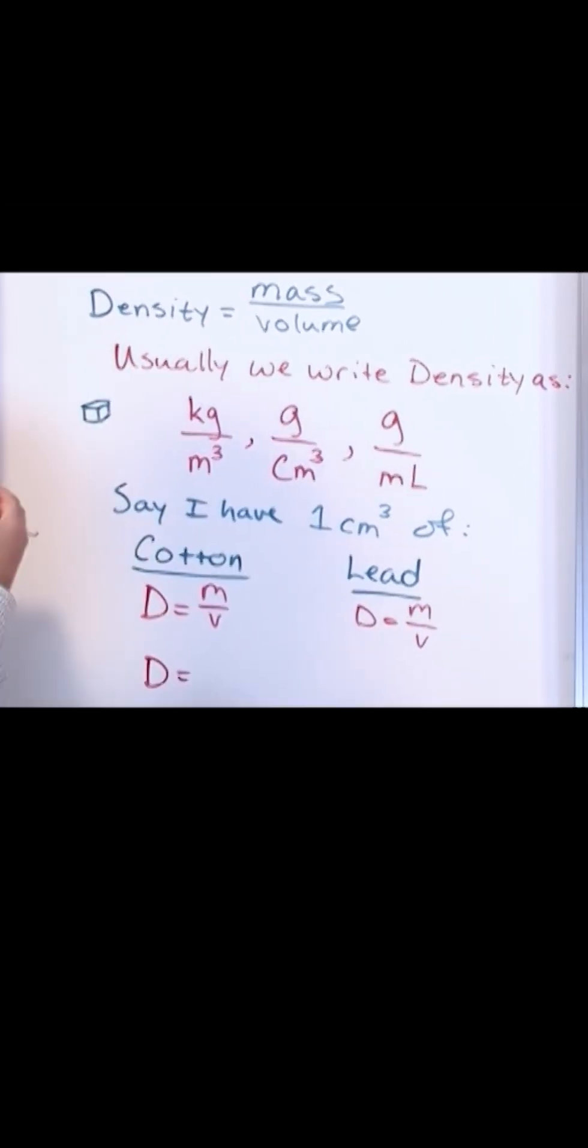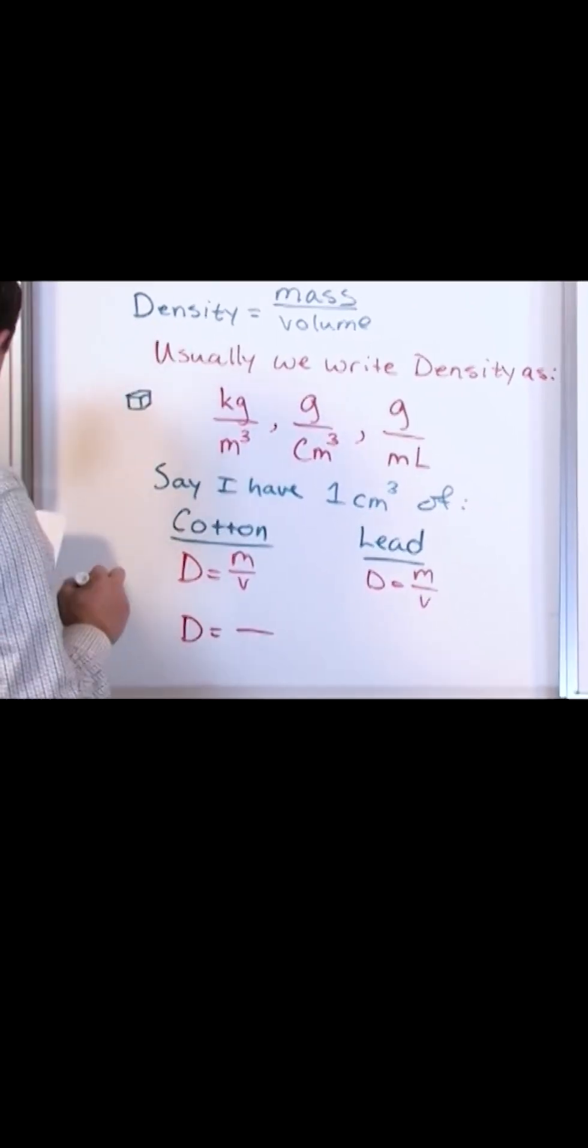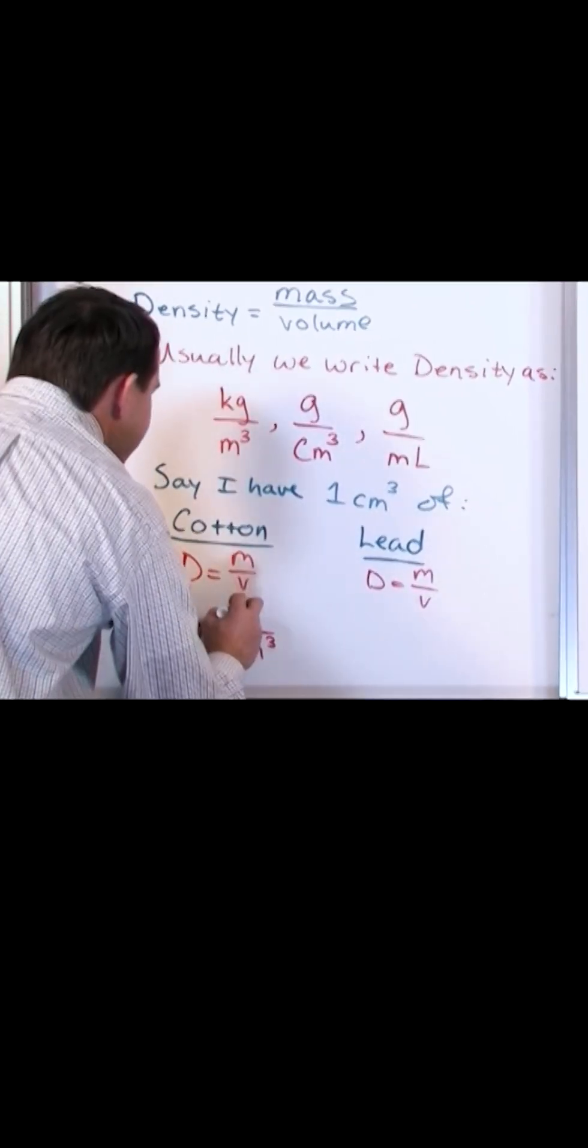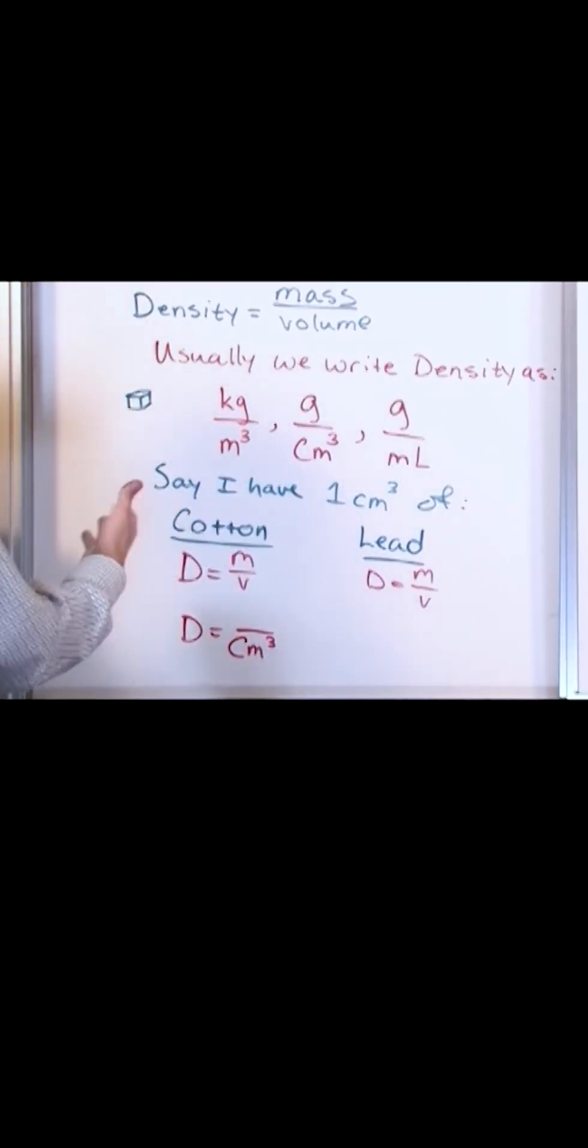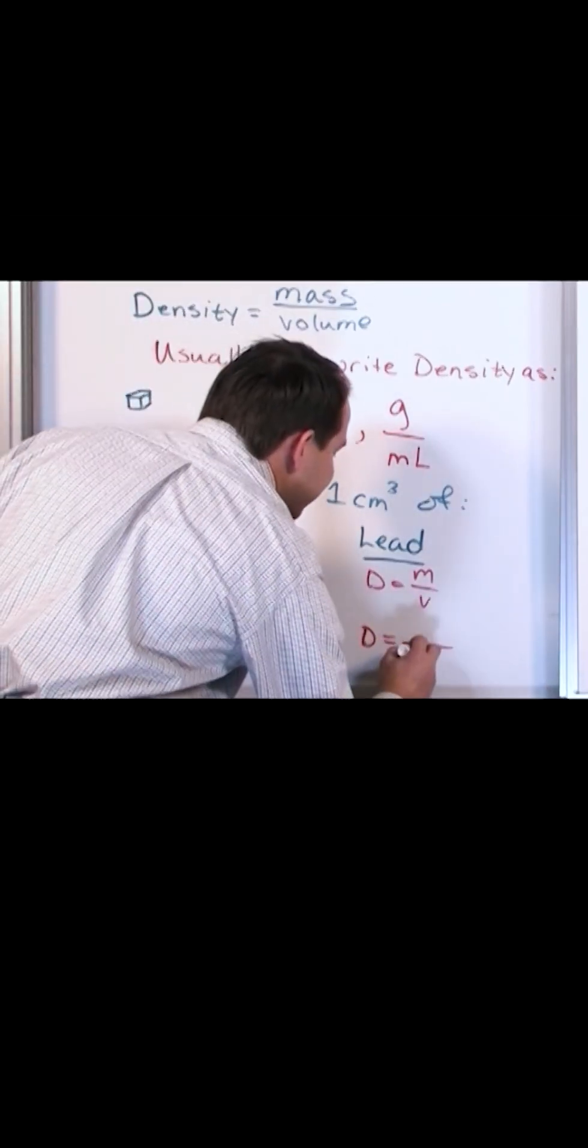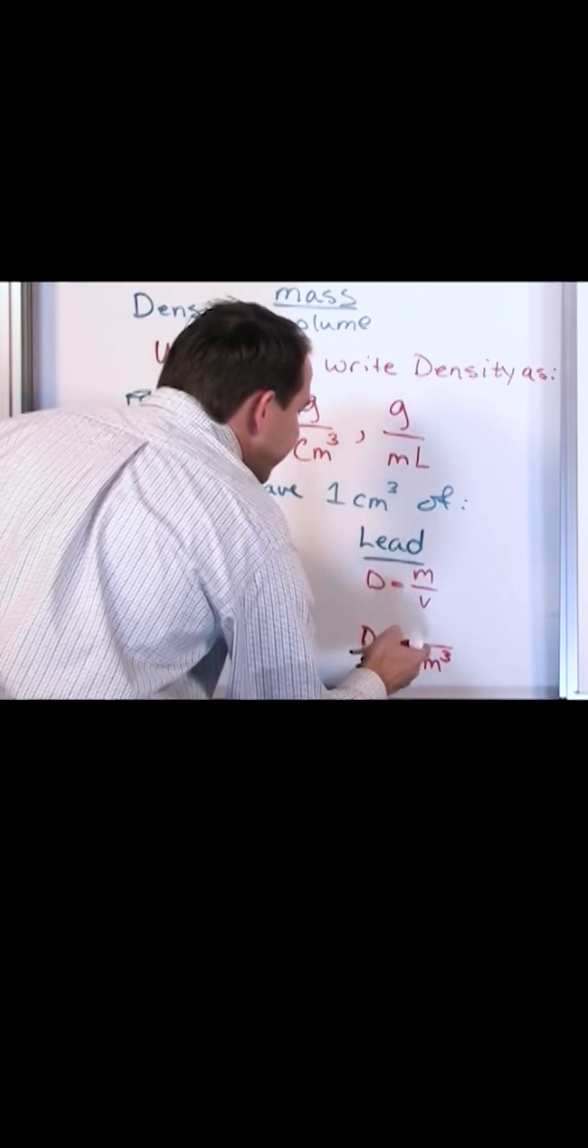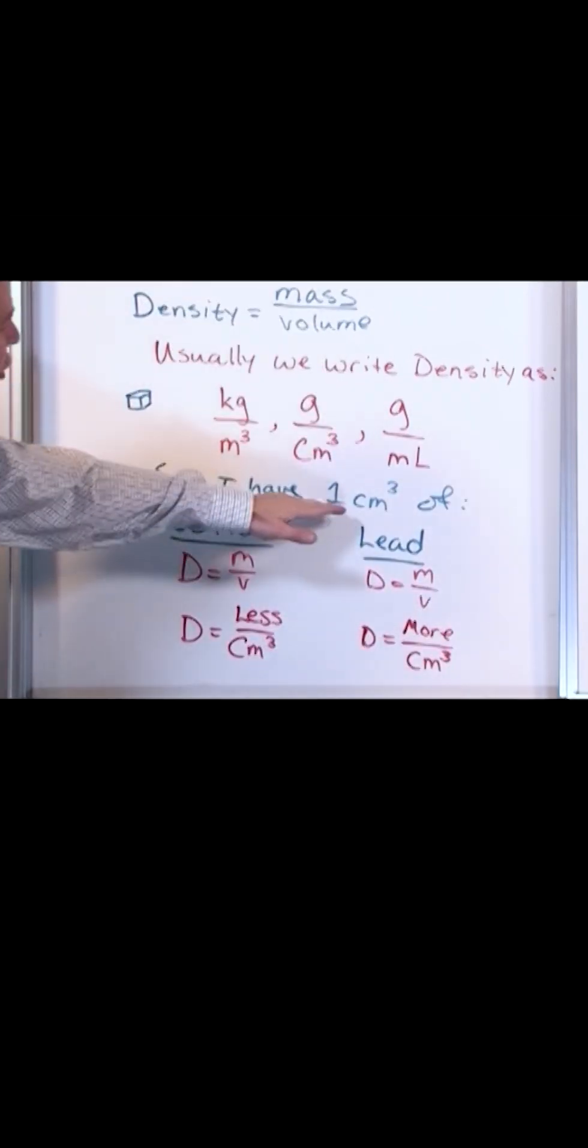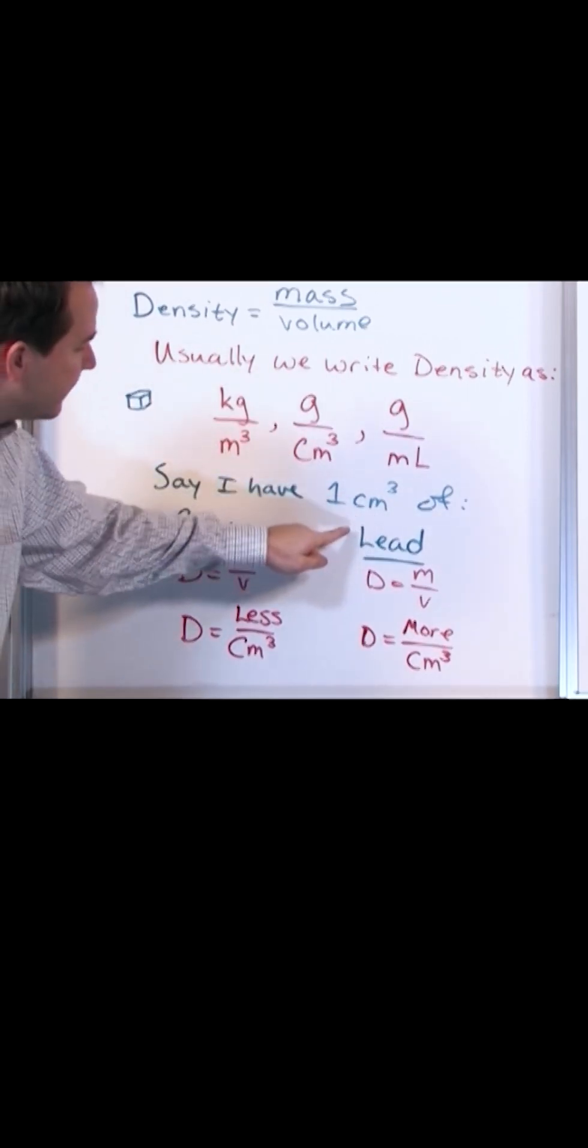Let's say that for the cotton, I know that I have one cubic centimeter, but if I'm going to have the same amount of lead and cotton, I know I'm going to have less mass. So if I have the same volume, I'm going to have more mass for the lead. If I have one cubic centimeter, the same volume of cotton, and the same volume of lead...